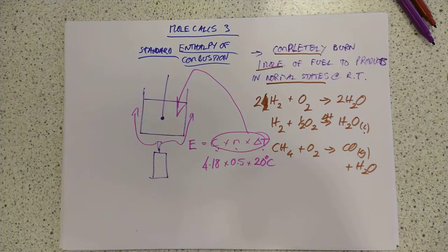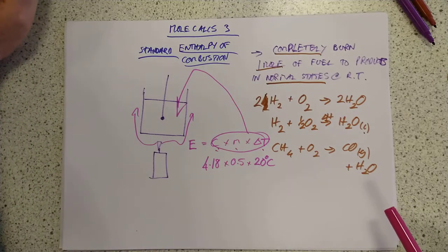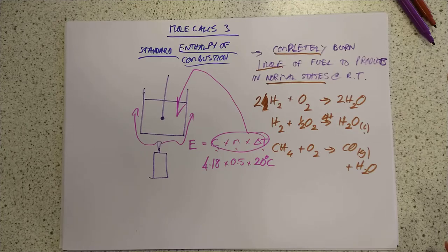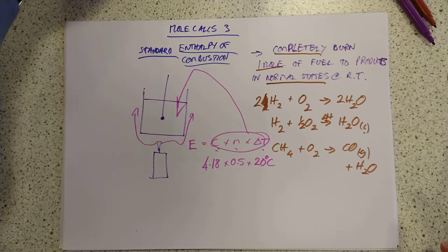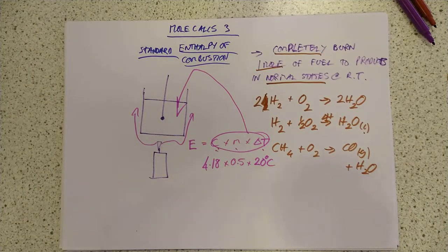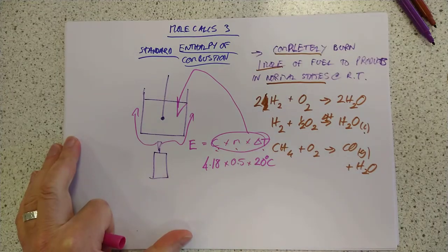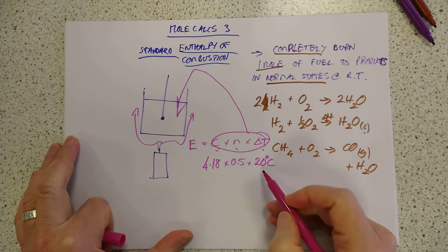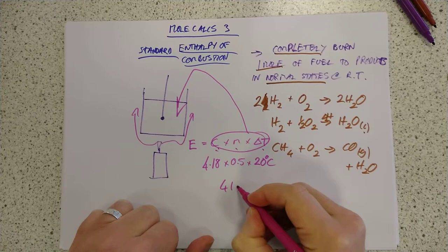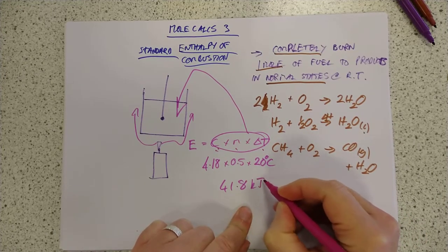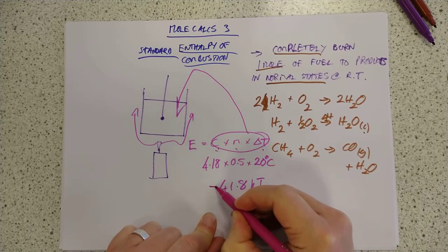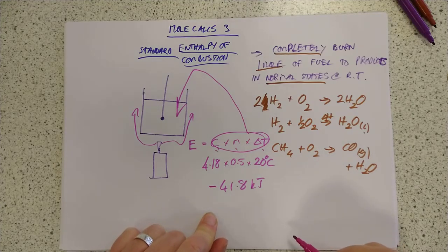We would do the sums and out would pop a figure of, let me just check, that would be 2.09, isn't it? 2.09, that's half of 4.18 times 20. I would pop a figure of, of course it is. I never thought of that. That's 10 times that. 41.8. That number there is in kilojoules. It's actually negative because it's exothermic. This reaction is negative.